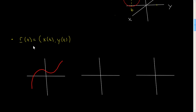So this parameterization describes this curve. What I want to now consider is stretching, and I will consider the stretching in the X direction — the Y direction will be similar. I'll consider a new parameterization called R̃ of T, which will be given by (A·X(T), Y(T)), where A is a constant. What curve does this describe?